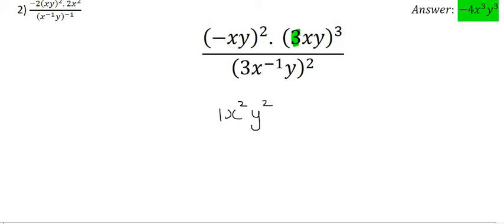Moving on to this next section: many people say 3 to the power of 3 is 27 — that is correct. But if you want to stick to the exponent rules, this 3 currently has an exponent of 1, and so 1 times 3 is 3, giving us 3 to the power of 3. You could change that to 27 if you want. For the x, it's 1 times 3, giving x to the power of 3, and the same for the y.